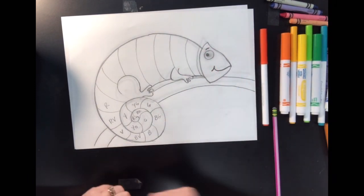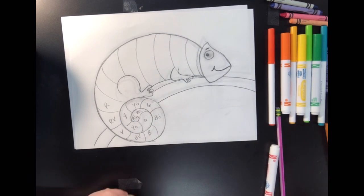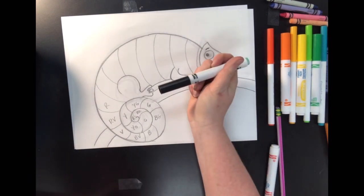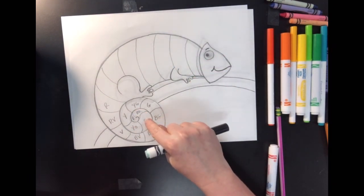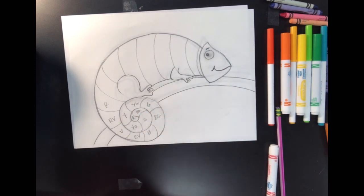Both look good. And when you're ready, we're going to outline the whole chameleon with a black marker and color in each space brightly to make it look magnificent.